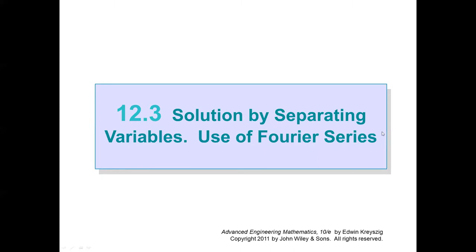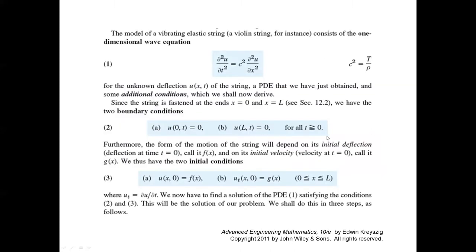After we get this equation, we need to find four conditions to solve it — two boundary conditions associated with x and two initial conditions associated with time. The boundary conditions are relatively easy to stipulate because the two ends are fixed and don't move. So at x equal to zero, at any arbitrary time, the deflection is zero. Similarly, at x equal to L, at any arbitrary time, the deflection is zero.